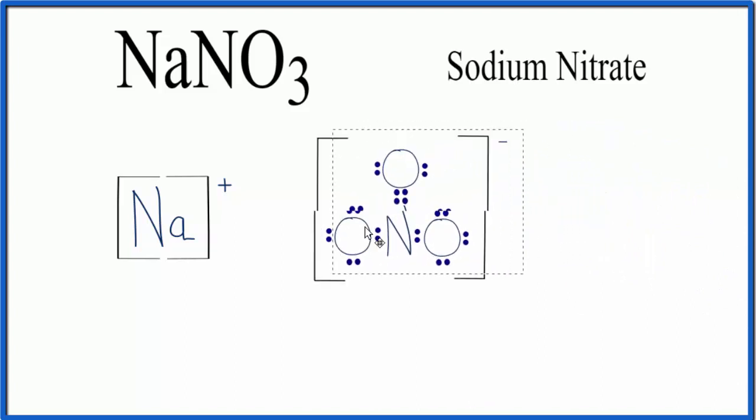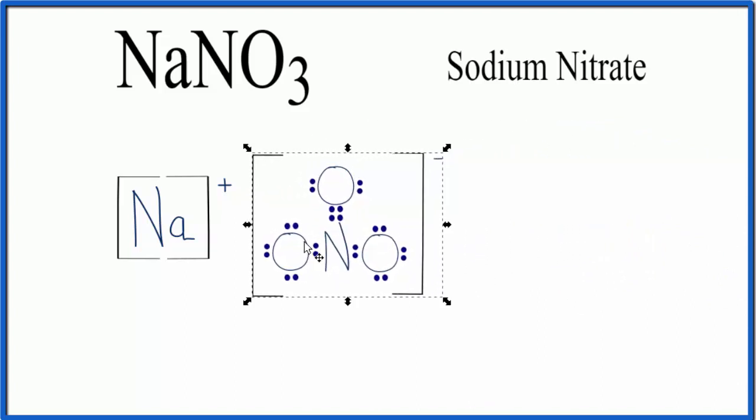It's negative, and because it's negative, it's attracted to the positive. So that's why we have an ionic bond. The positive and the negative are attracted.